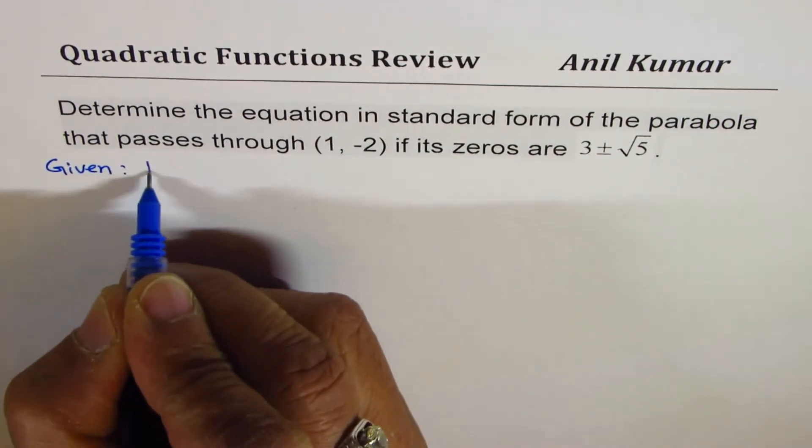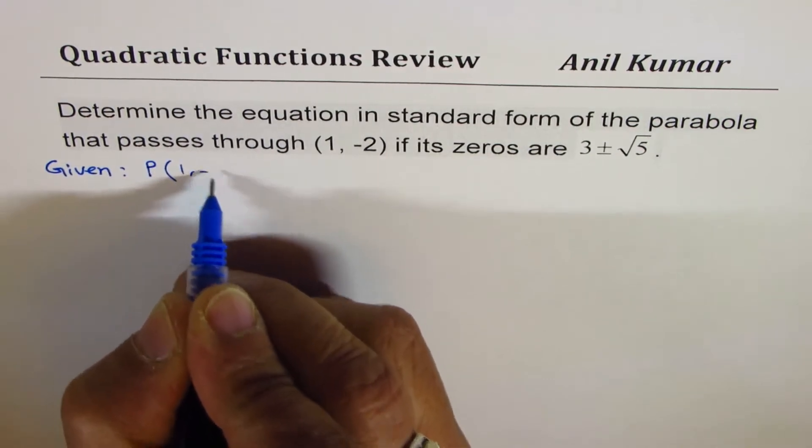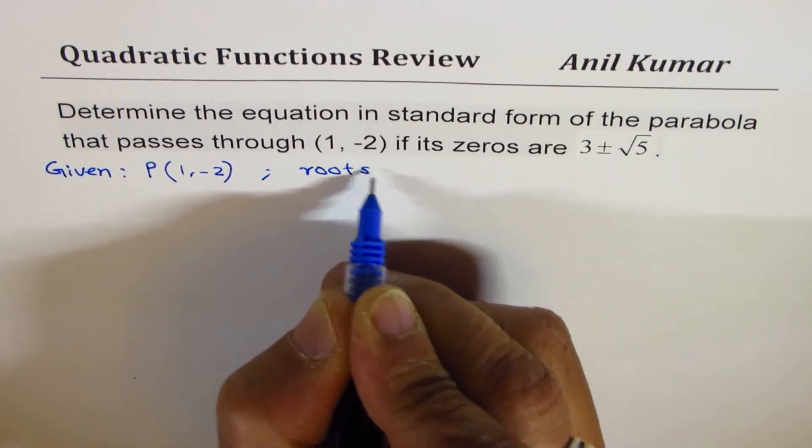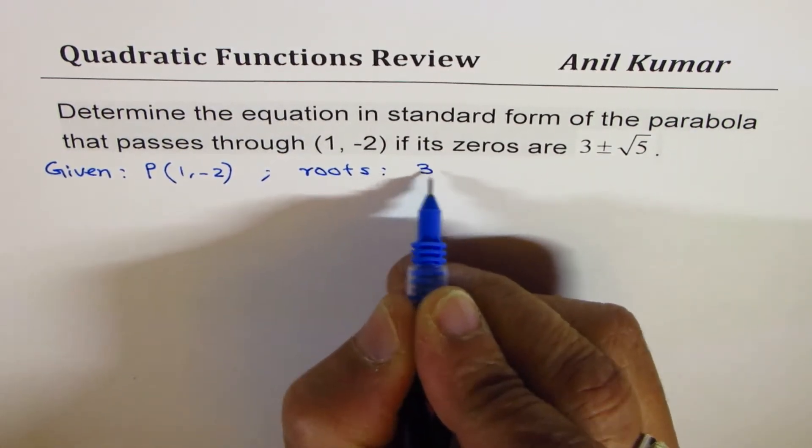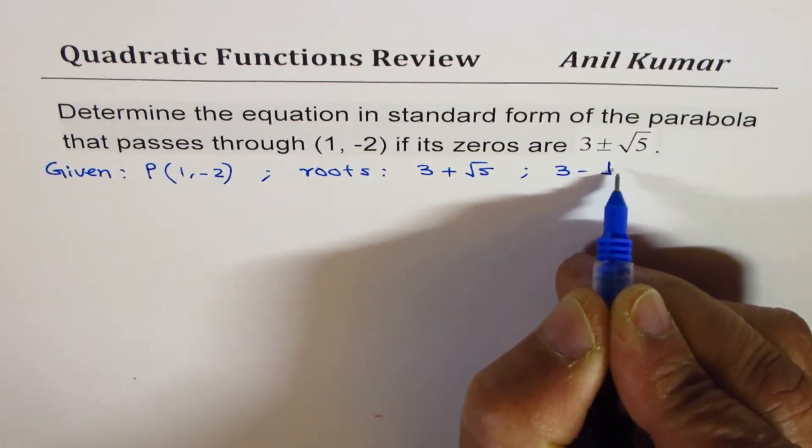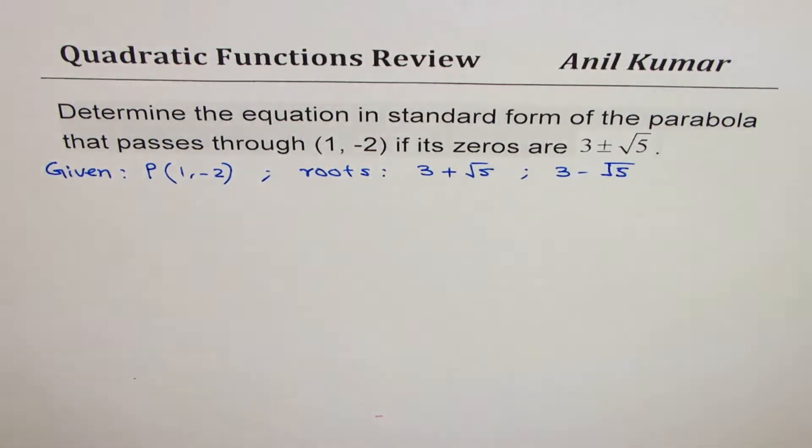What we are given here is a point P, let's say (1, -2), and we are also given roots of the equation which are at 3 + √5 and 3 - √5. So we have conjugate roots here.